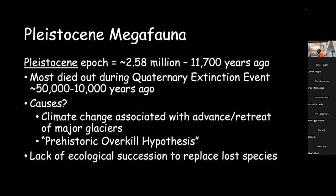Most of these things died out during this extinction event. A few different theories as to why - the two main ones are climate change, with landscape scale changes mostly because of the movement and retreat of glaciers changing the climate and making it not ideal for these large animals. The other is called the prehistoric overkill hypothesis, which is basically once humans showed up in North America, we kind of went a little nuts with the hunting. That one's a little more controversial. Truthfully, it's probably not any one cause - it's probably a multitude of reasons why this happened in a relatively short timeframe.